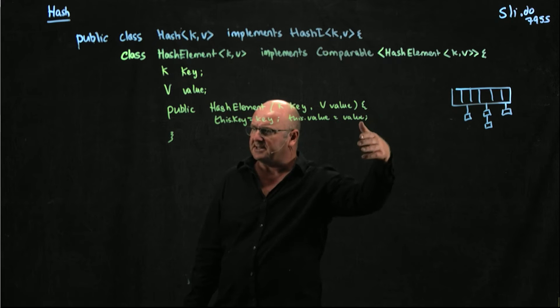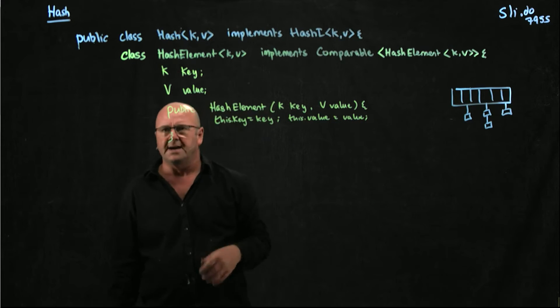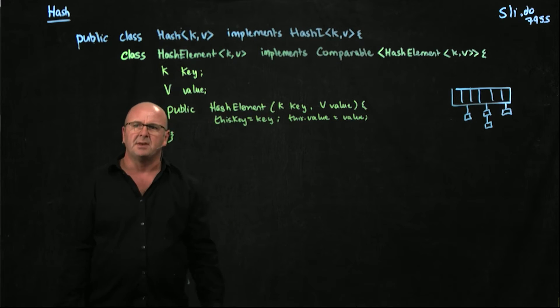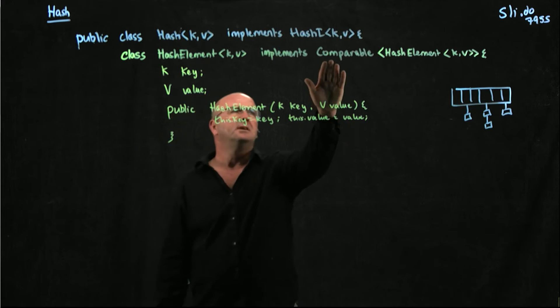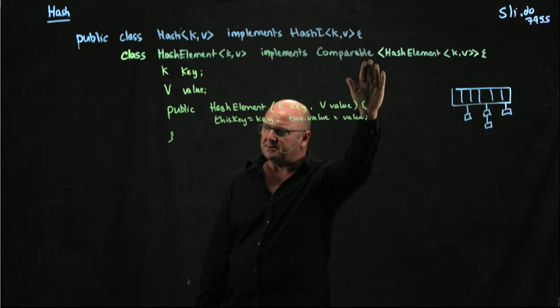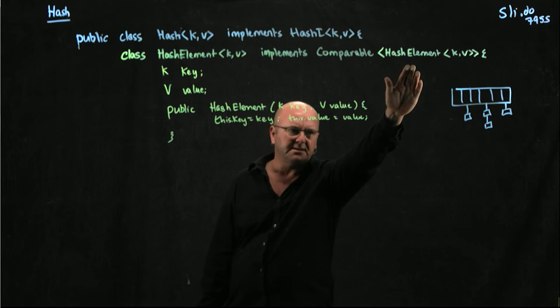So that's basically what we've seen before. Like with our node class, we've had something similar. We've had similar little inner classes. The one thing that this has to do is it has to implement Comparable for HashElement's keys and values.